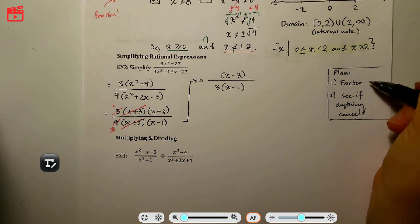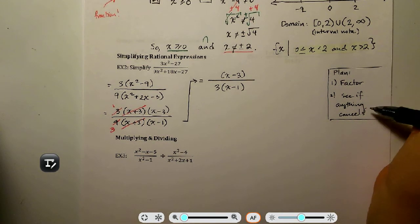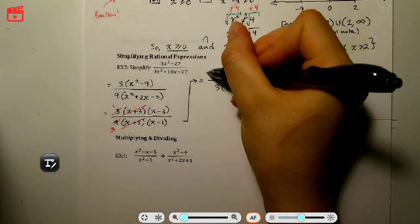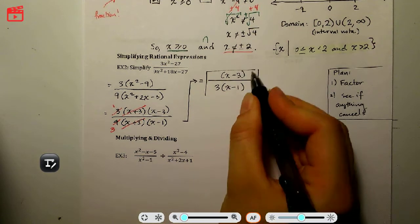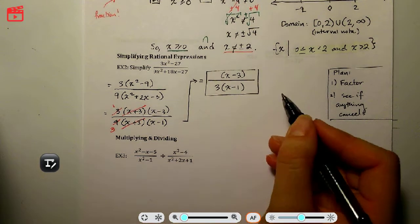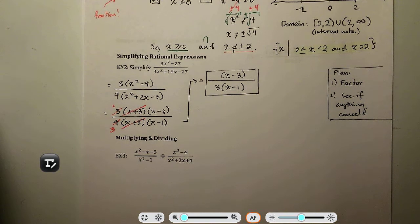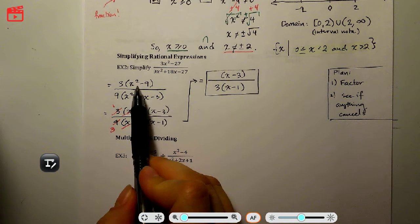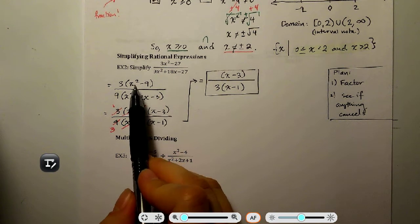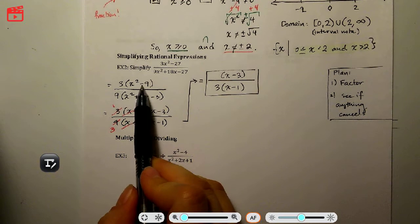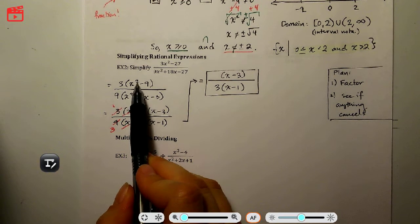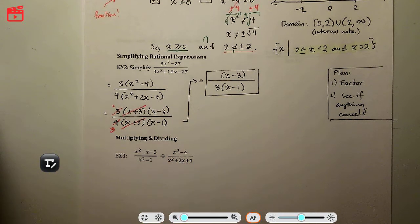The plan — factor and see if anything cancels — is the key. The more challenging part is being sure you've cancelled everything and factored all terms. Being able to identify a difference of squares is a really useful skill: if you see a binomial with a minus sign where one term is a perfect square, it's worth checking.